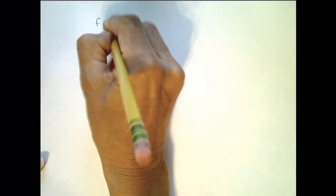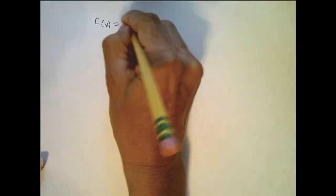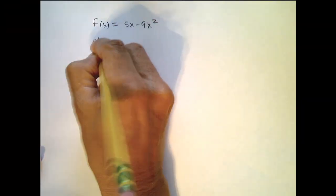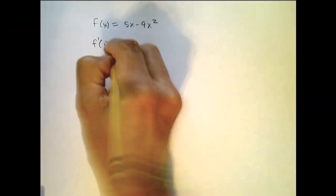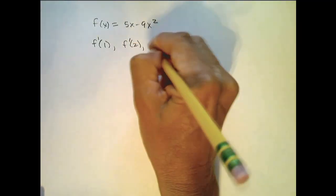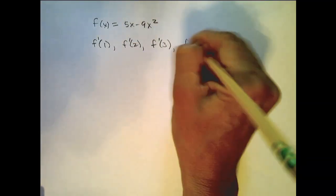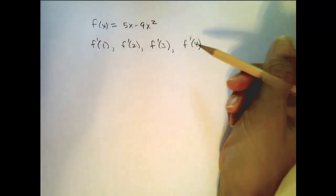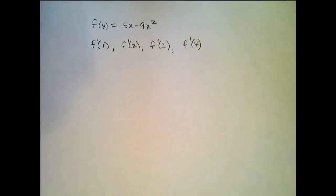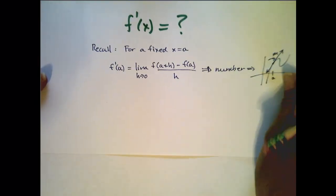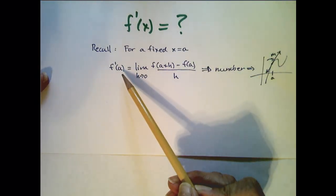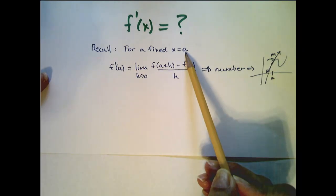Well let me pose this question to you. If I had this particular function, f of x equals 5x minus 9x squared, and I asked you to find f prime of 1, f prime of 2, f prime of 3, f prime of 4, then what you would need to do is apply this formula that we just wrote over here four different times for each different value that I've chosen for a.